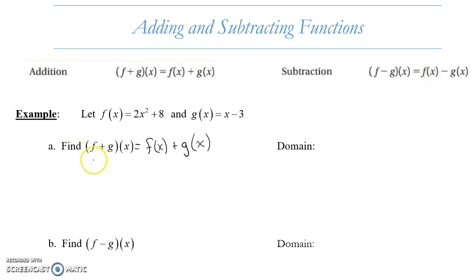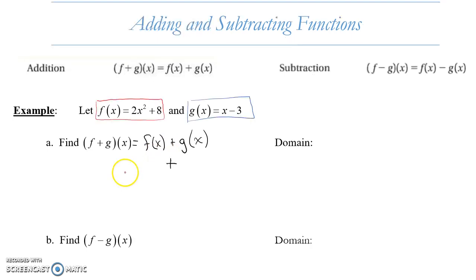So for part a here, when we have the function f of x is equal to 2x squared plus 8, the function g of x is equal to x minus 3. When we write f plus g of x, we're really asking you to take function f of x and add it to function g of x. So in this case, I'm going to use the red color to denote function f of x. When I have f of x plus g of x, I'm taking the entire function f of x, which is 2x squared plus 8.